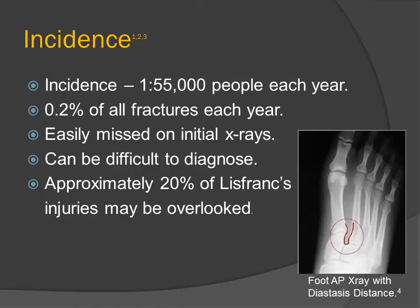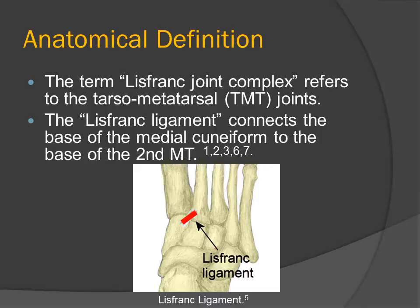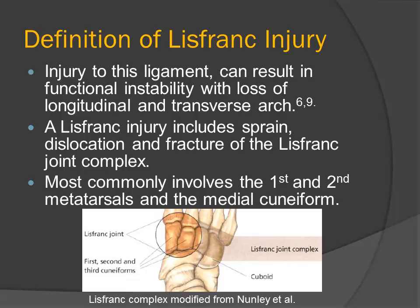Lisfranc fractures are also easily missed on initial x-ray and can be difficult to diagnose. The Lisfranc joint complex is another name for all of the tarsometatarsal joints, but the Lisfranc joint typically only refers to the first and second joints, which are attached by the Lisfranc ligament that connects the medial cuneiform to the base of the second metatarsal. Injury to the Lisfranc ligament can result in functional instability and losses in the height of the longitudinal and transverse arches of the foot.